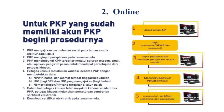Nomor telepon yang digunakan harus memang nomor yang valid. Dalam hal petugas khusus telah meyakini kebenaran identitas PKP, petugas khusus melakukan persetujuan pemberian sertifikat elektronik, dan barulah PKP dapat mendownload sertifikat elektronik pada laman Innova. Itulah dua cara bagaimana PKP bisa mengajukan permohonan sertifikat elektronik: pertama datang langsung ke KPP mengisi formulir, atau cara kedua tidak perlu datang, cukup online saja.